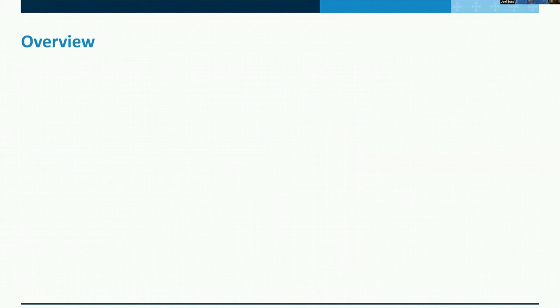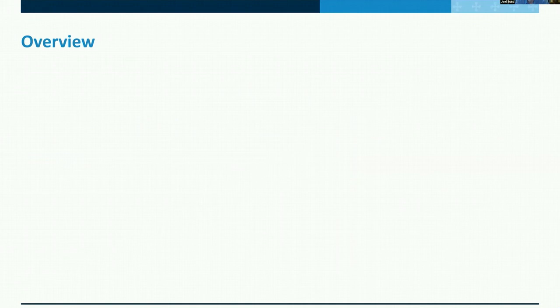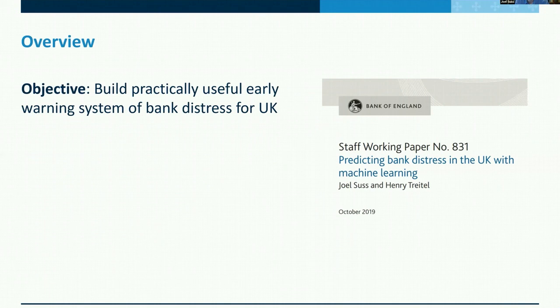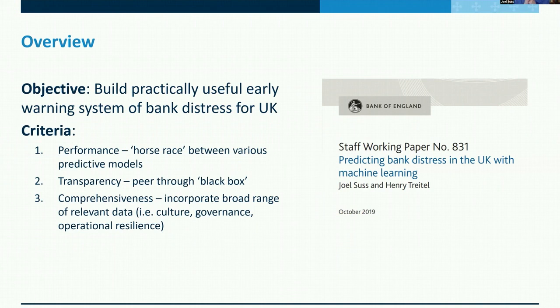The views expressed by me here are my own and not necessarily those of the Bank of England or its committees. This work is published as a staff working paper by myself and a colleague at the Bank of England, Henry Tritel. What we tried to do was build a practically useful early warning system of bank distress for the UK — something that can actually be used by bank supervisors at the Bank of England. There are really three criteria on which we focus.